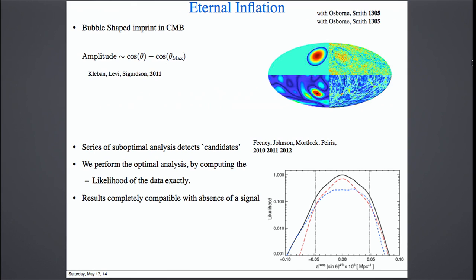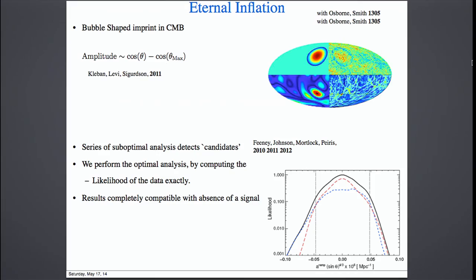This was an ambiguous detection. With collaborators, we were able to perform the optimal analysis, which is non-trivial — computationally prohibitive — and requires some linear algebra techniques. We completed the full likelihood, and the results are completely compatible with Gaussianity, with the absence of the bubble. Fifty percent of the time in the Monte Carlo, we get more signal than what we see in the sky. This tells us the signal is not there.